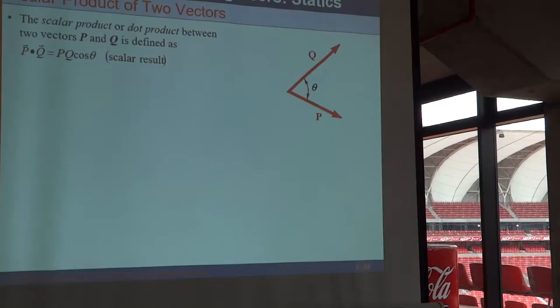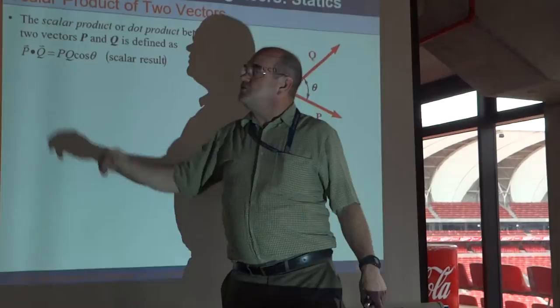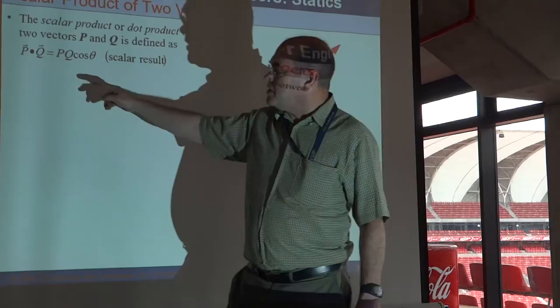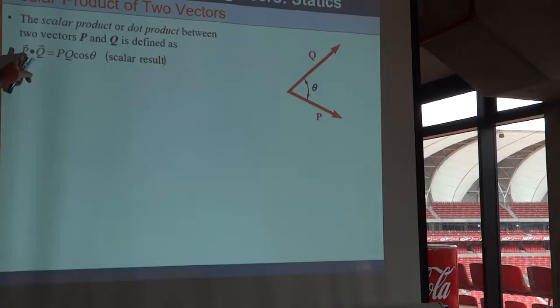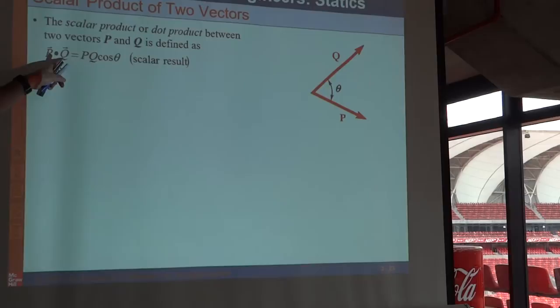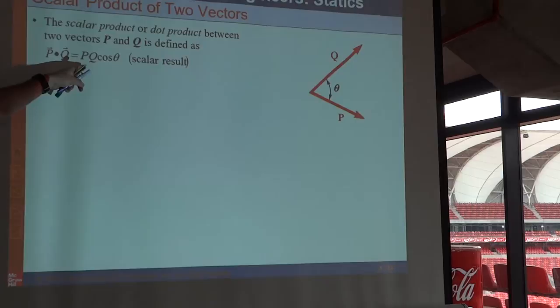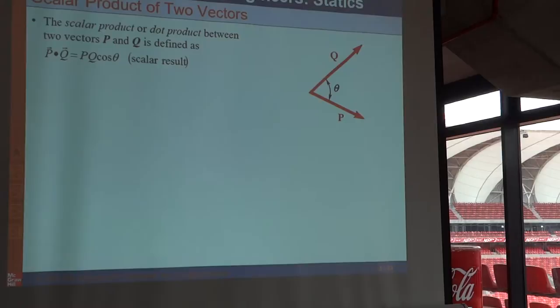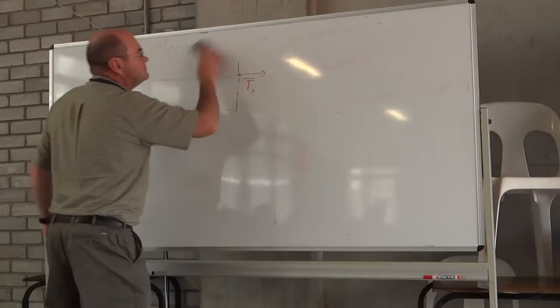The dot product of two vectors - we call it the dot product. The dot product of two vectors is a scalar. Its magnitude is p times q times cosine theta. Now what this tells us is: if you dot product a vector with a unit vector, your answer will be the component of that vector in the direction of the unit vector. So this gives us the product of the two vectors. The magnitude is cosine theta. If q has a magnitude of one, then p cosine theta will be the component of p in the direction of the unit vector. The dot product of any vector with a unit vector gives us the component of that vector in the direction of the unit vector.